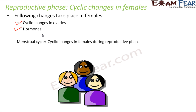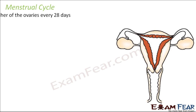So what is the menstrual cycle? These are cyclic changes in females during the reproductive phase. Throughout the reproductive phase of a female, these menstrual cycles will continue. When the menstrual cycle stops, the female is no more in her reproductive phase. So for reproduction, menstrual cycle is a must. Now we will spend some time understanding what exactly the menstrual cycle is.